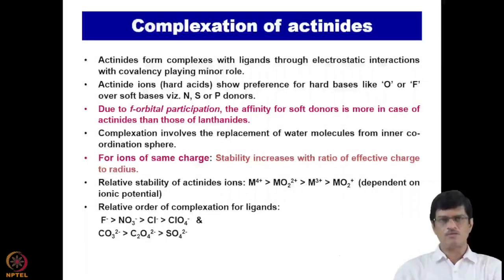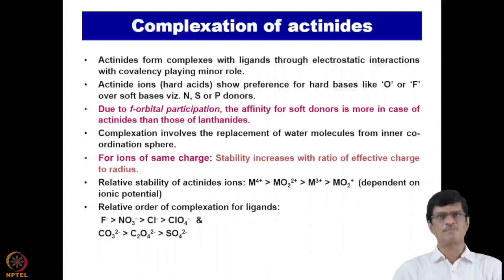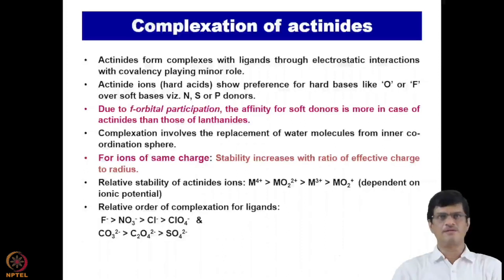After we are familiar with the chemistry of the early actinides like Uranium, Neptunium, Plutonium and Americium, it is required now to have some discussion on the complexation of actinides, which is very important in the nuclear fuel cycle applications. First, actinides form complexes with the ligands through electrostatic interactions like Ion-Ion as well as Ion-dipole interactions. In some cases covalency is also playing a role, but to a very minor extent. This covalency becomes somewhat important in the case of the earlier actinides.